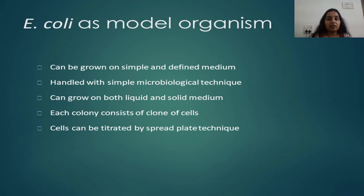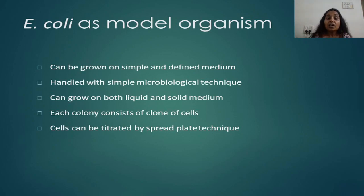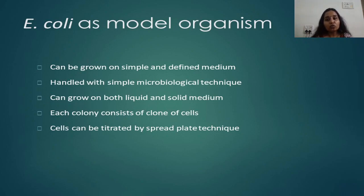When it comes to Escherichia coli, as we all know, it can be grown on a very simple and defined medium — something as simple as nutrient agar or a defined medium like M9 medium. Along with that, being not a highly pathogenic strain, it can be handled with simple microbiological techniques and doesn't require high-grade biosafety cabinets when experimenting with E. coli.